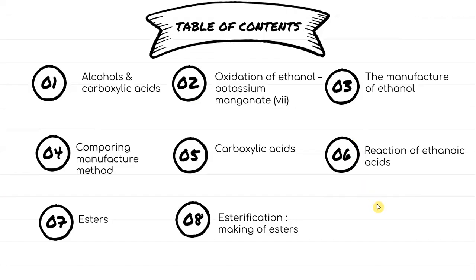Our study outline comprises of alcohols and carboxylic acids, oxidation of ethanol with potassium manganate 7, the manufacture of ethanol, comparing manufacture methods, carboxylic acid, reaction of ethanoic acids, esters, and finally esterification — the making of esters.